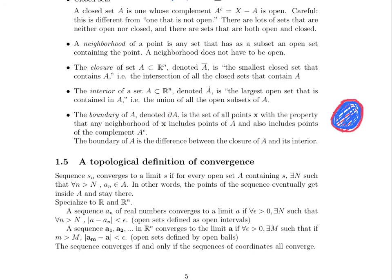Let's talk about a topological definition of convergence. We say a sequence s_n converges to a limit s if for every open set A containing s, there exists a capital N such that for all little n, the same index is greater than capital N, a_n is in the set A. And in other words, the points of the sequence eventually get inside the set A and they stay there.